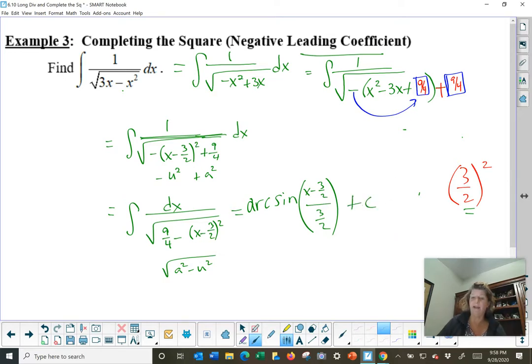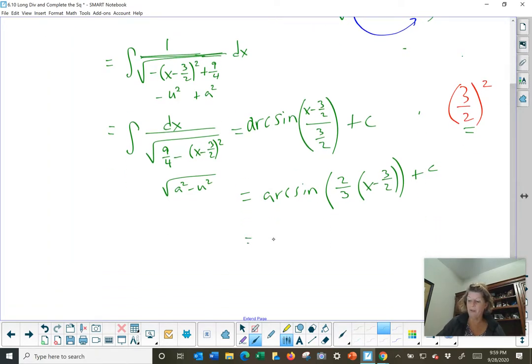I can't leave it looking that terrible. So, arc sine multiply by 2 thirds, and that would go through x minus 3 halves. Still can't leave it. It's just begging to be simplified. Arc sine of 2 times, 2, how do I want to do it? 2 thirds, 2 thirds x minus 1. Okay, I'm satisfied with that. I can leave it there. Ah, feels good.